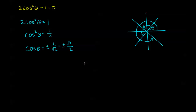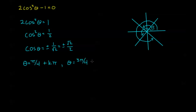We can be creative when writing the solution. We could write theta equals pi over 4, 3 pi over 4, 5 pi over 4, and 7 pi over 4 as 4 separate pieces, but that's a lot of writing. We notice these angles are a distance of pi from each other, so we can write theta equals pi over 4 plus k pi, and theta equals 3 pi over 4 plus k pi, where k is an integer.